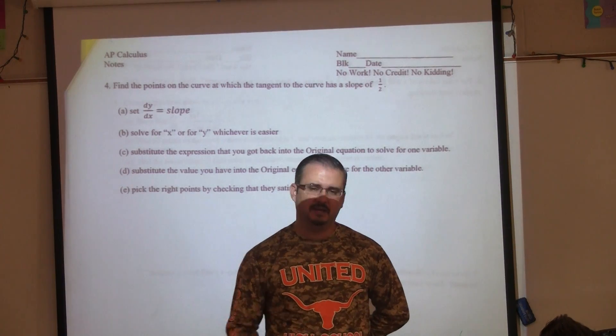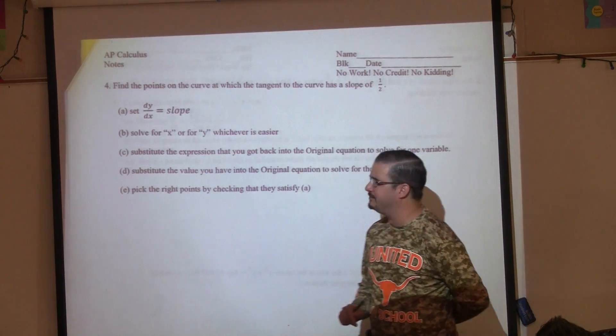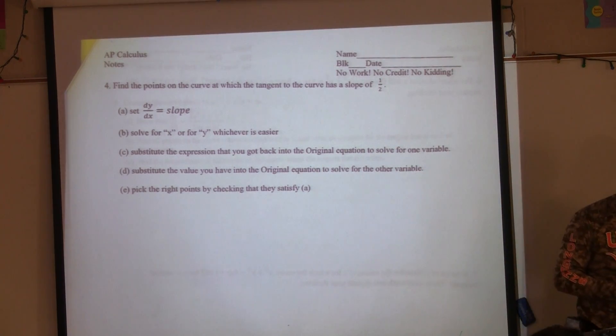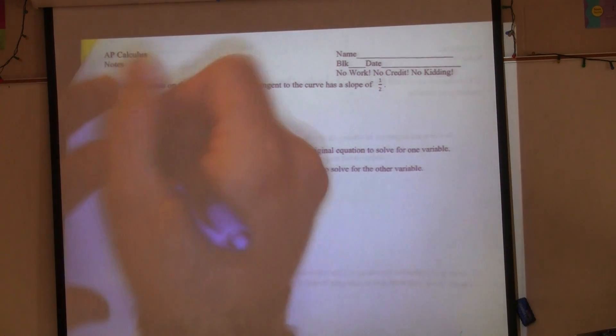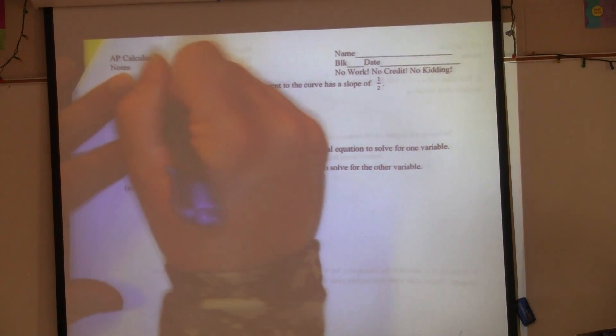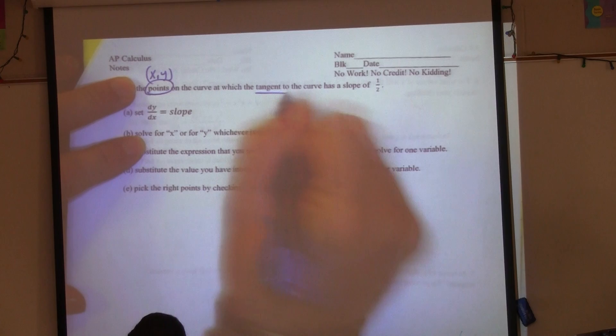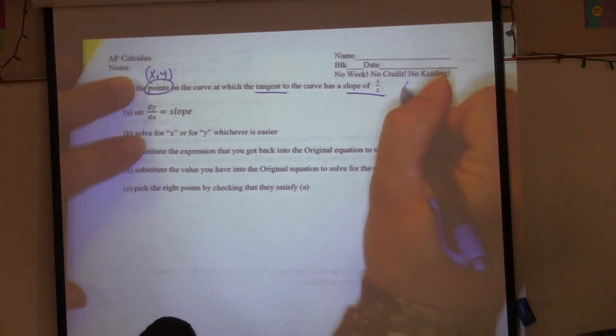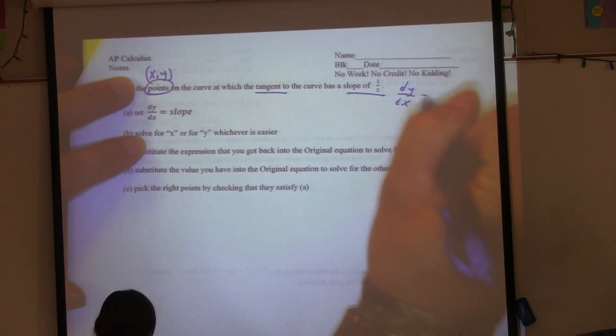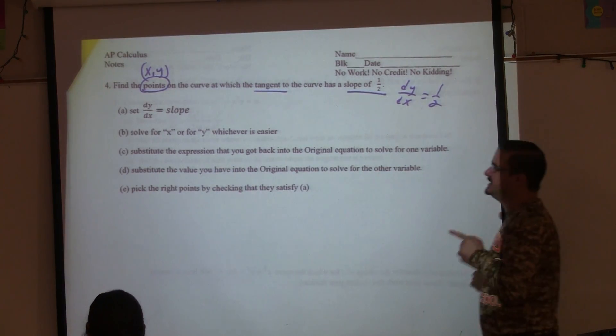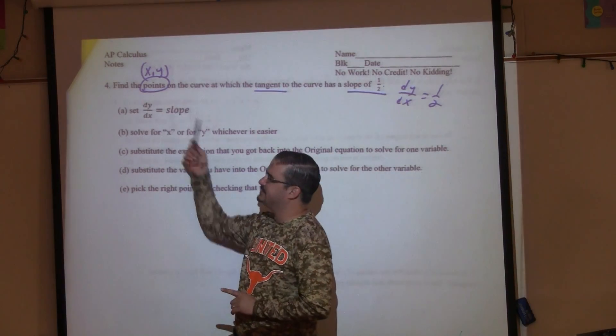These problems are a little tricky. It says find the points on the curve at which the tangent to the curve has a slope of 1/2. So we're looking for points where the tangent has a slope of 1/2, which means the derivative is equal to 1/2. That's why step A says to set the derivative equal to the slope.